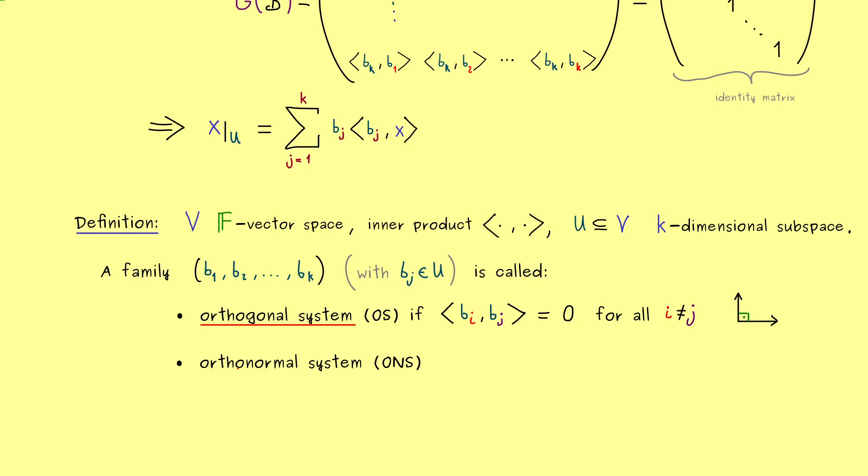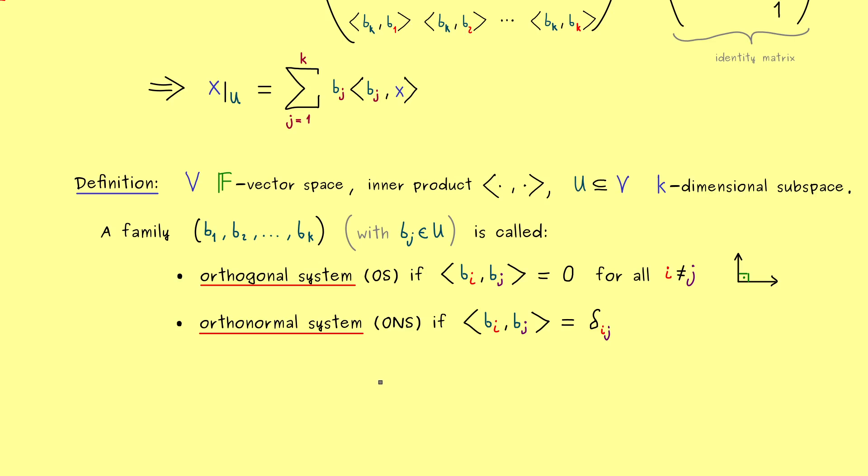Hence, the next thing here is an orthonormal system, in short ONS. And there, in addition to the orthogonality from before, we also want to set the length of each vector to 1. And you already know, for this we can use the Kronecker delta. Now at this point you might realize that we didn't say anything about a basis yet. And the reason for that is that these two cases are more general. In fact, they can also make sense if we change the number of elements in the family. So for bases we need exactly k vectors, but for an orthonormal system we could have less vectors. And this already explains why we get two additional names.